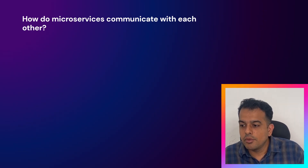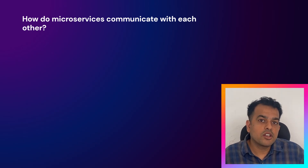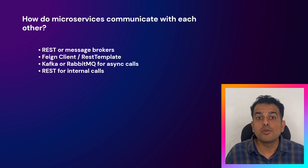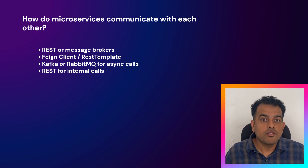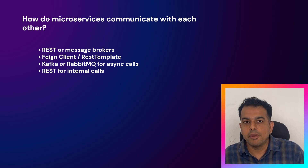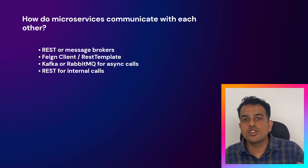After that, the interviewer asked: how do microservices communicate with each other? Microservices can communicate using REST APIs or message brokers. For simple synchronous calls, we use REST with tools like FeignClient or RestTemplate. For asynchronous communication, we use messaging queues like Kafka and RabbitMQ.